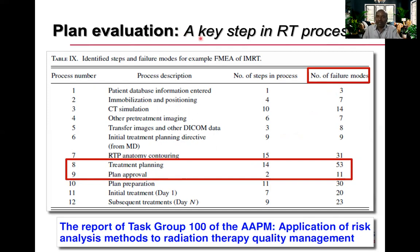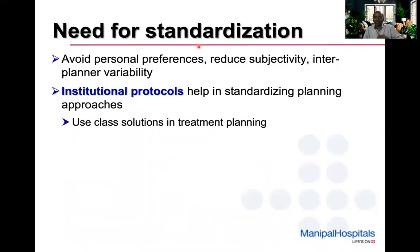Plan evaluation remains a key step in the RT treatment delivery chain. The most important requirement is that we standardize the entire process of treatment planning — avoid personal preferences completely and reduce subjectivity as much as possible. We should ensure there is no inter-planner variability. From planner to planner, there shall not be variability; everybody should follow standard practice.